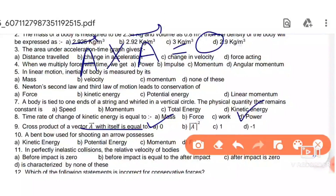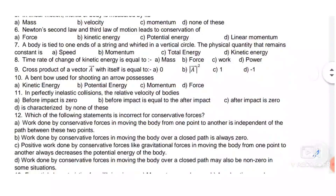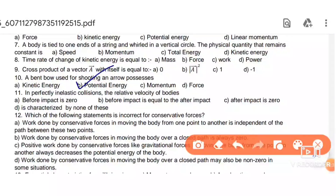Next: a bent bow used for shooting an arrow possesses potential energy. The potential energy is possessed in the bent bow.